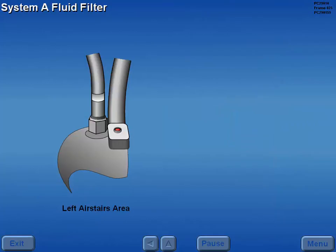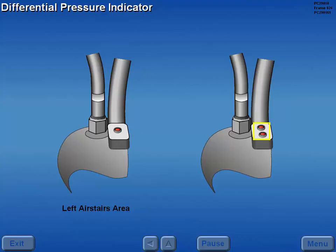A filter located in the left air stairs area removes foreign particles from System A return fluid before entering the reservoir. The filter is equipped with a differential pressure indicator which provides a visual indication of a clogged filter element. Some aircraft have two indicators.